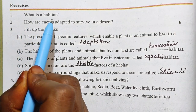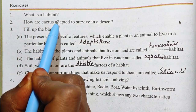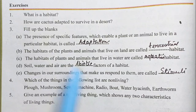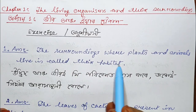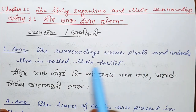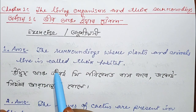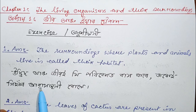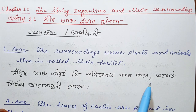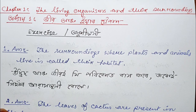Question number 1. What is a habitat? The surroundings where plants and animals live is called their habitat. The translation in the local language: the surroundings where plants and animals live is called their habitat.